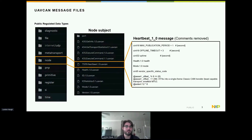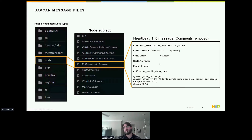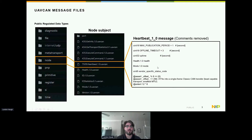The foundation of UAVCAN is sending and receiving messages between nodes. Message files are defined similarly to UORB or ROS messages in PX4, with each field having a data type and a name. In the heartbeat message, for instance, you'll want to keep an eye on the uptime, health, and mode fields. Each message has a port ID — for heartbeat, the port ID is 7509 — which is used to encode what message is being transferred.